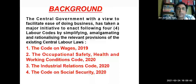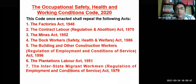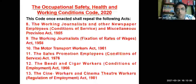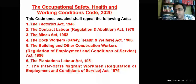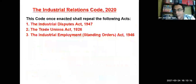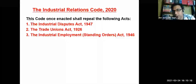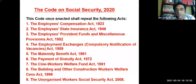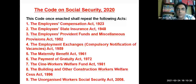The Occupational Safety Code will merge at least 13 acts, important ones being the Factories Act, the Contract Labour Act, and special acts for journalists and cine workers. The Industrial Relations Code will merge three acts: the Industrial Disputes Act 1947, the Trade Union Act, and the Industrial Employment Standing Orders Act. The Code on Social Security will merge nine laws, including the Employee Compensation Act, the ESI Act, the Provident Fund Act, Maternity Benefit Act, Payment of Gratuity, and so on.